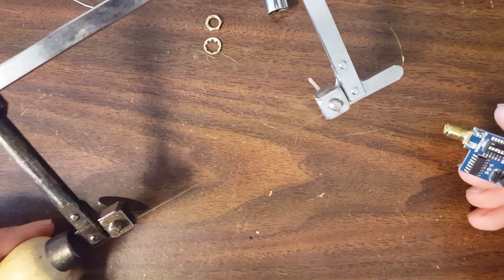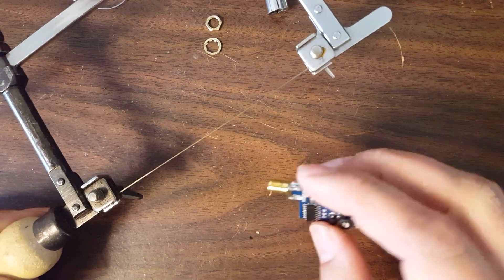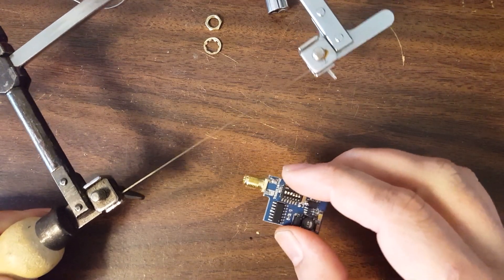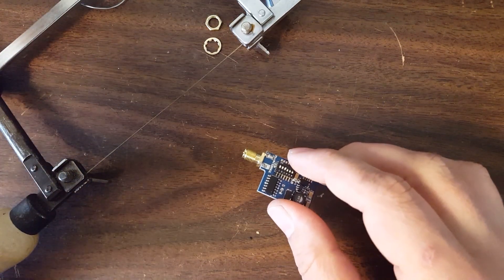So what I do happen to have is I happen to have a jeweler's saw, which is basically just a very, very fine hacksaw. So I'm going to go and I'm going to just cut this off and I'll be back and we'll get on to the next step.